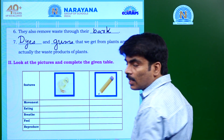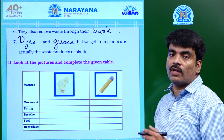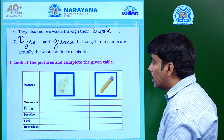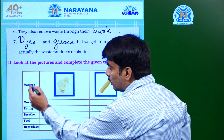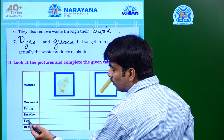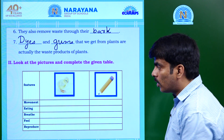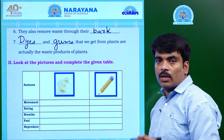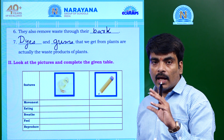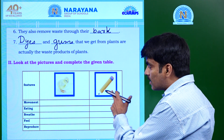In the second section, two pictures are given and we are going to classify and identify the differences between them. These two are classified with these features: movement, eating, breathe, feel, and reproduce. One picture is a chick — the baby hen is called a chick, hatched from an egg. The other is a pencil, which we make from the wood of a plant.